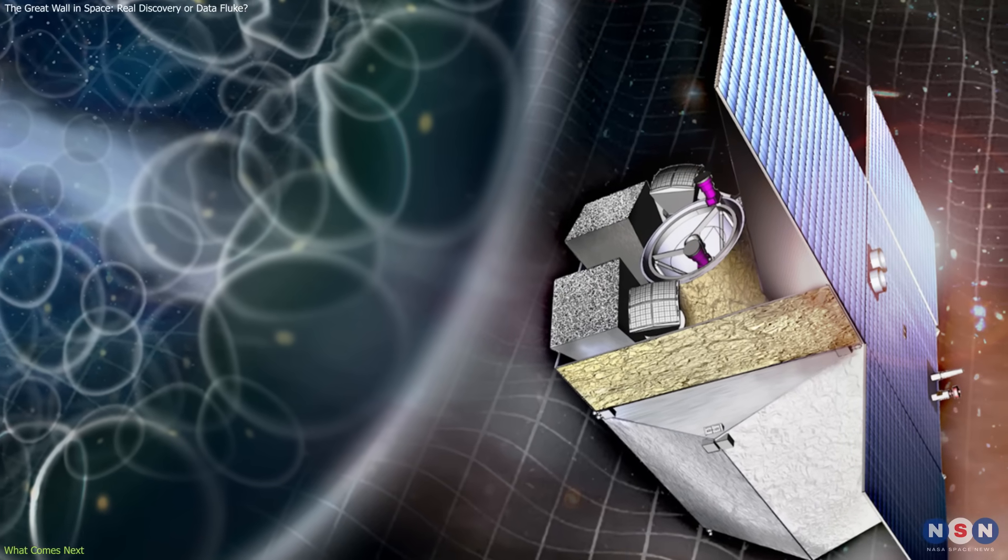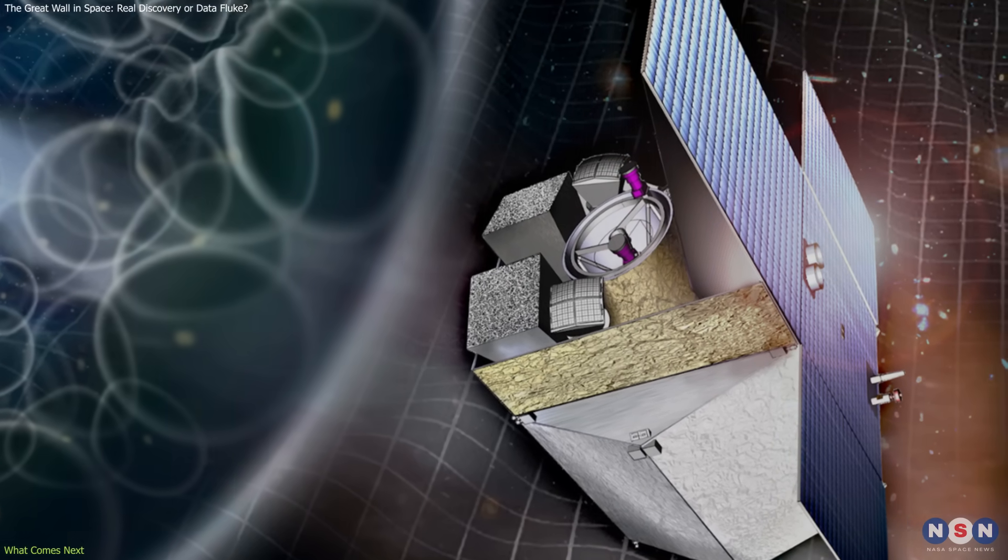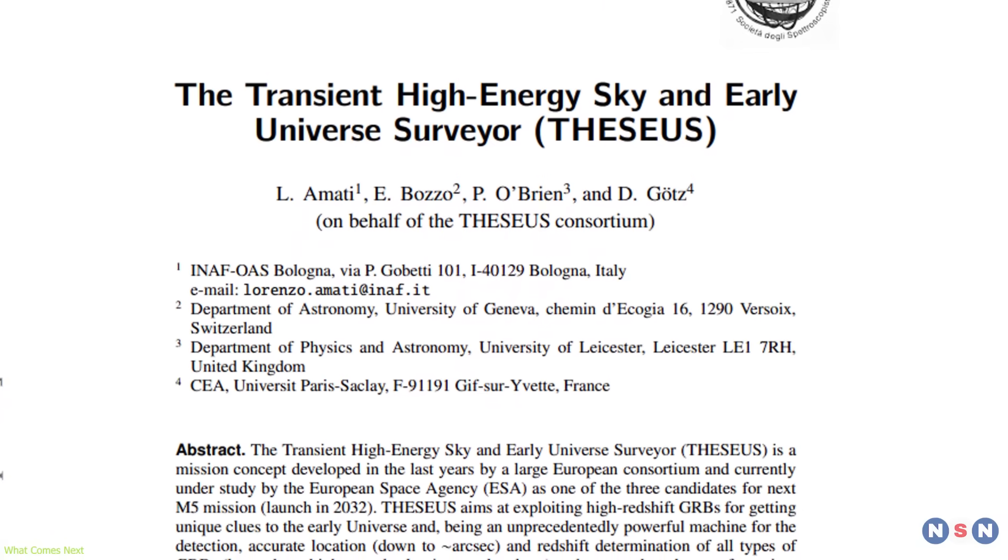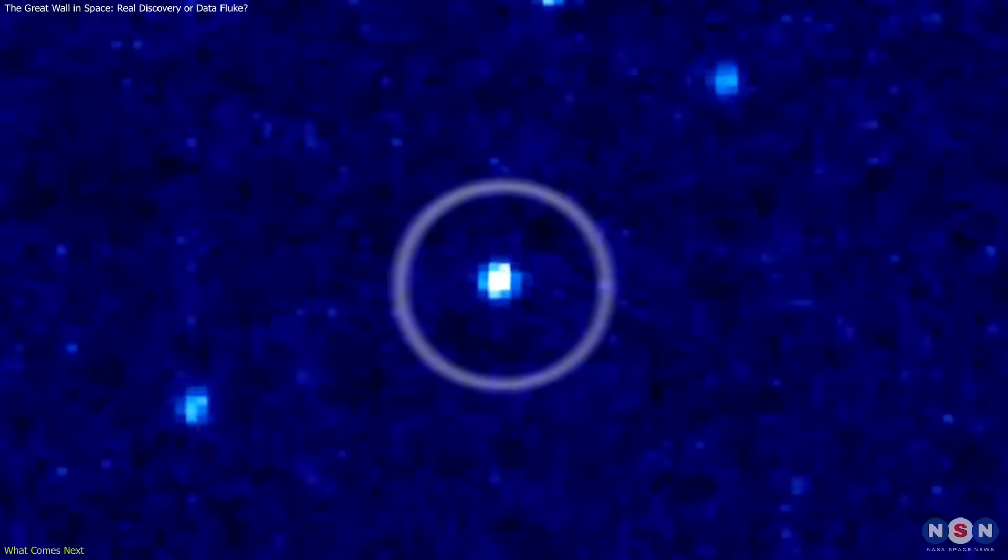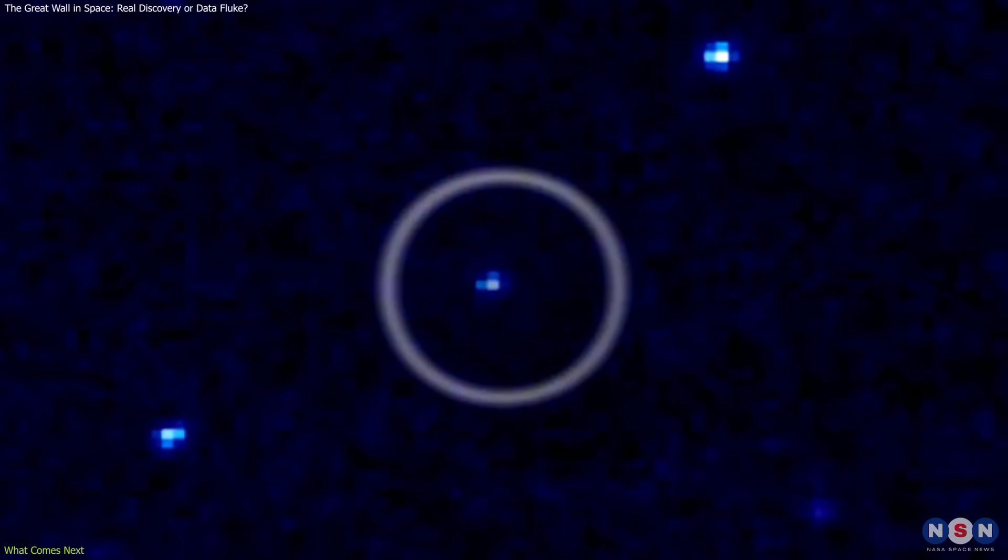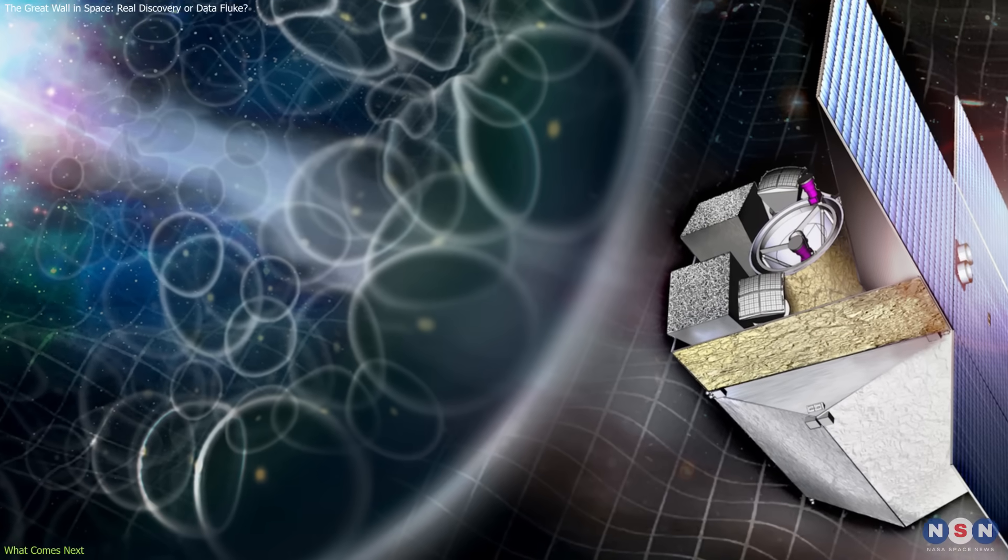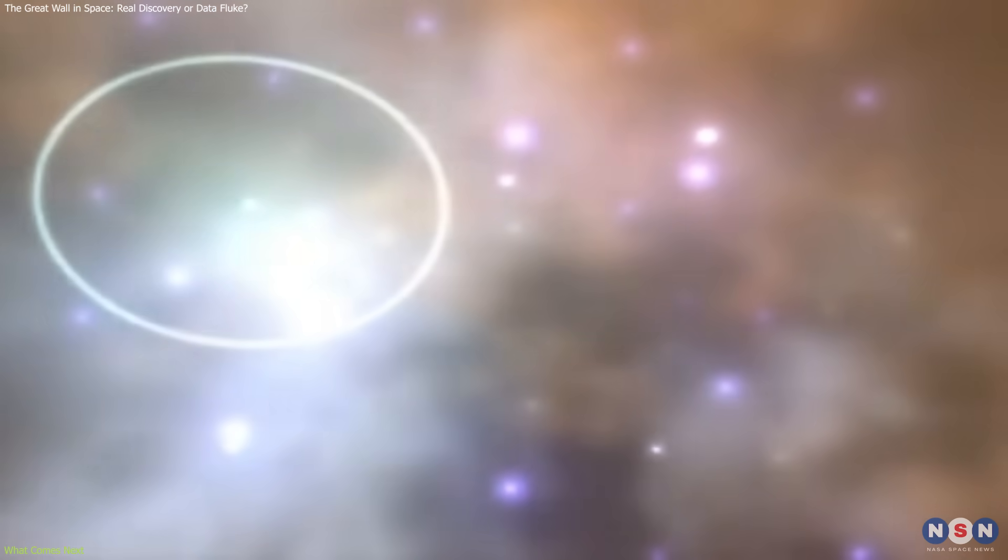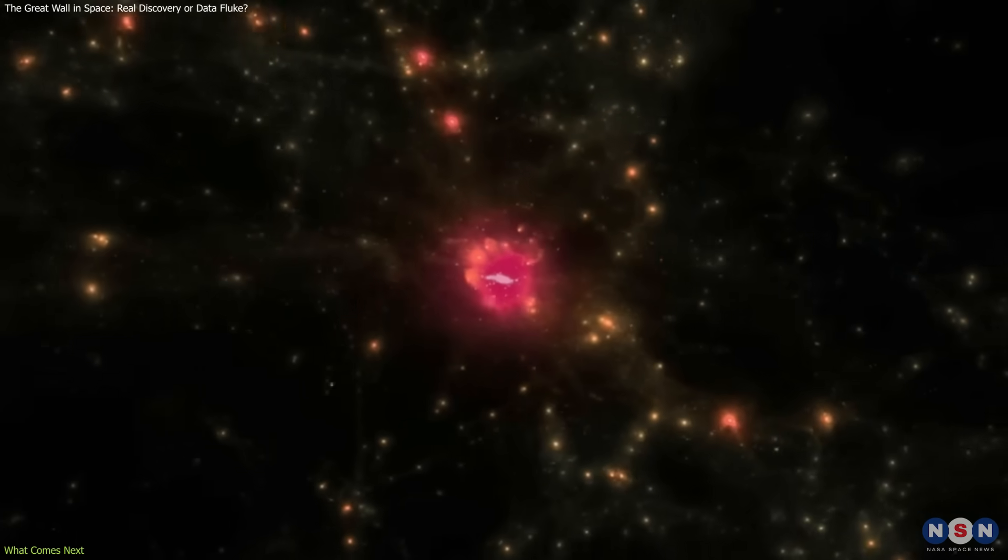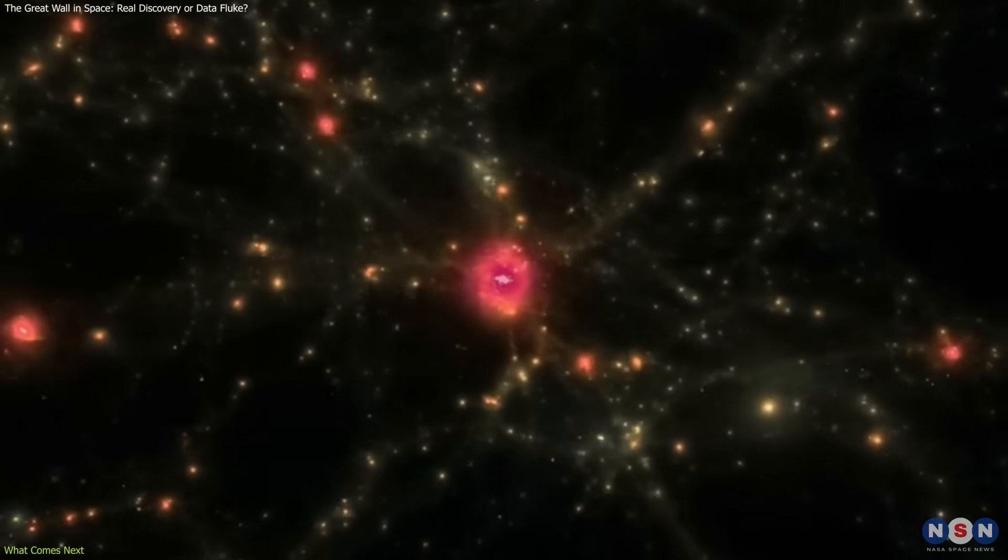To address this, the European Space Agency is preparing to launch Theseus, Transient High Energy Sky and Early Universe Surveyor. This mission will be equipped to detect fainter and more distant GRBs, with more even coverage of the sky. By dramatically increasing the number of GRBs recorded, especially at high redshifts, it could allow for a more accurate map of cosmic structure on the largest scales.